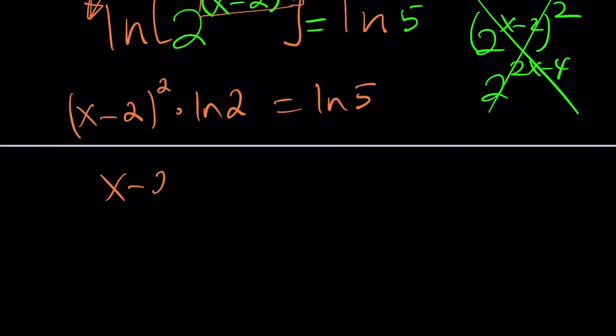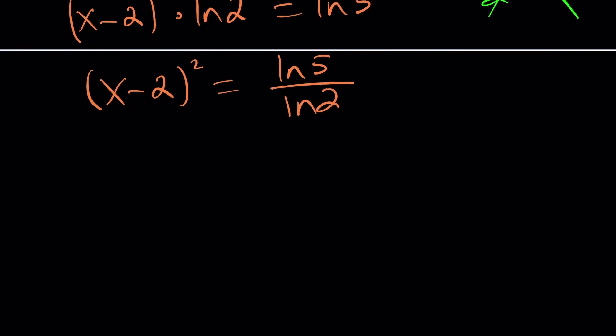x minus two quantity squared times ln two equals ln five. Now, I can go ahead and isolate the perfect square. It's just perfect. Unbelievable, right? It's amazing. Now, here's what you need to do.